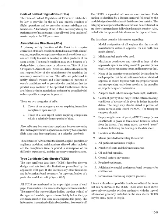Type Certificate Data Sheets (TCDS): The TCDS describes the type design and sets forth the limitations prescribed by the applicable CFR part. It also includes any other limitations found necessary for type certification of a particular model aircraft. All TCDS are numbered in the upper right corner of each page, matching the type certificate number. The name of the type certificate holder, together with all approved models, appears below that number. The TCDS is separated into sections identified by Roman numerals, each pertaining to a specific aircraft model.